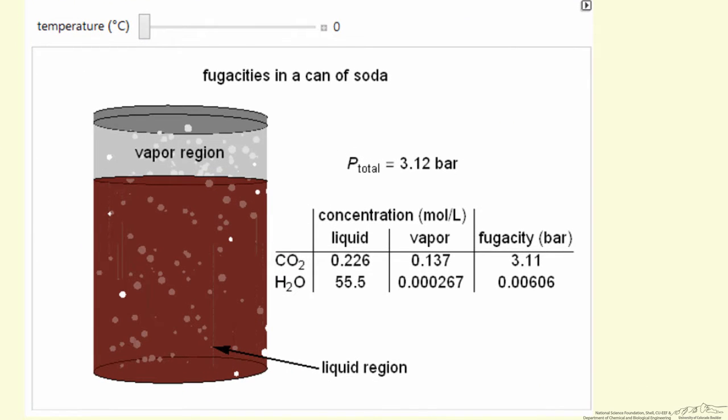If we look at a snapshot of this simulation at zero degrees C, we've listed the fugacity of carbon dioxide, 3.11 bar, and that's essentially the partial pressure of CO2 in the gas phase. We've also looked at the fugacity of water, 0.00606, that's also the saturation pressure of water at this temperature.